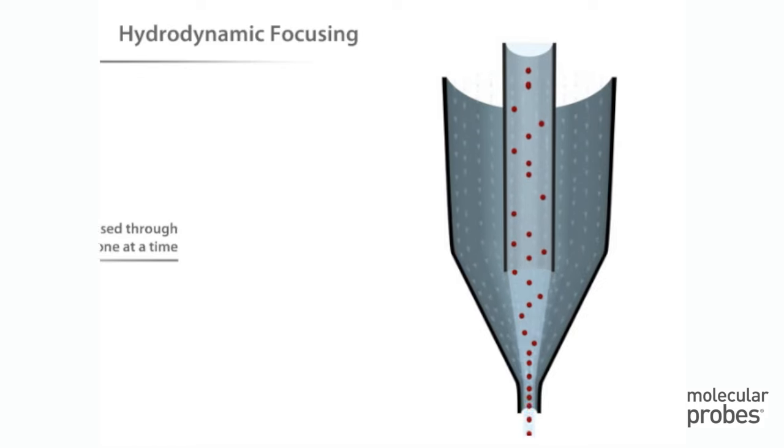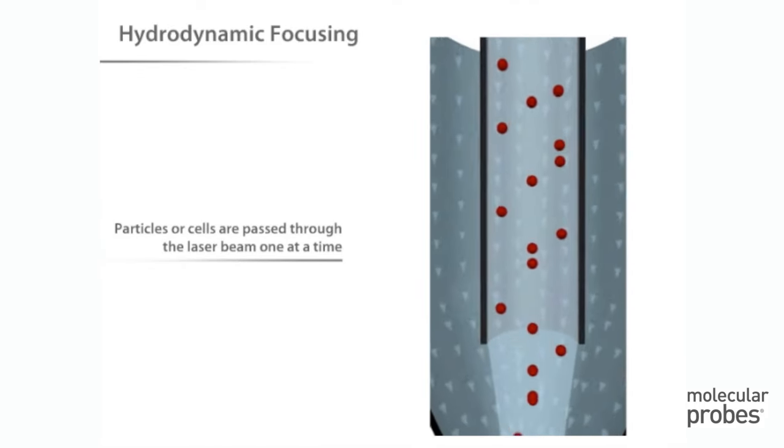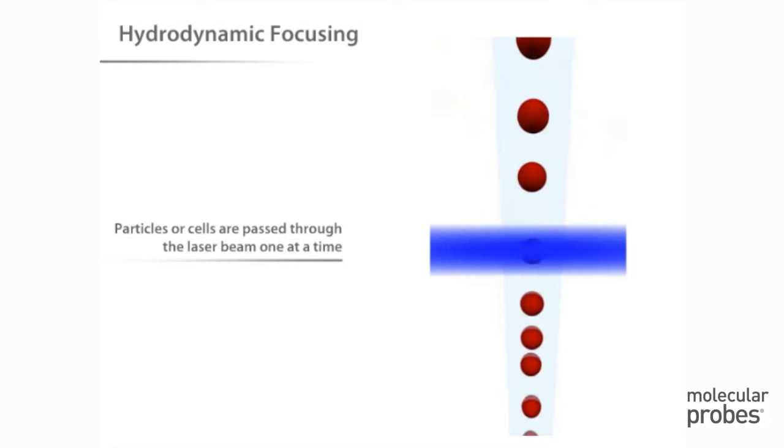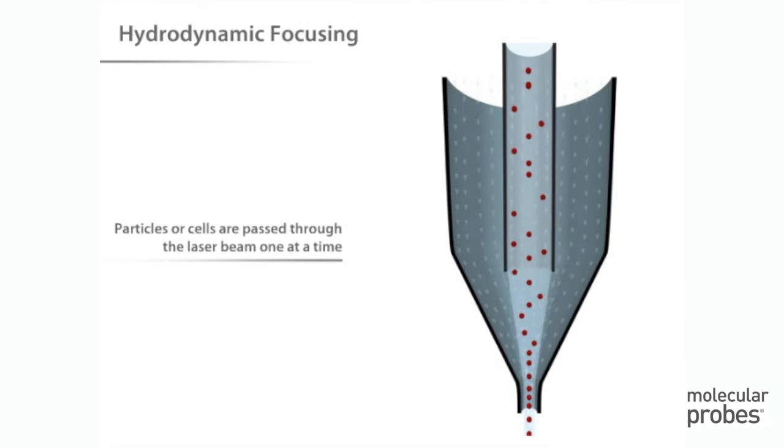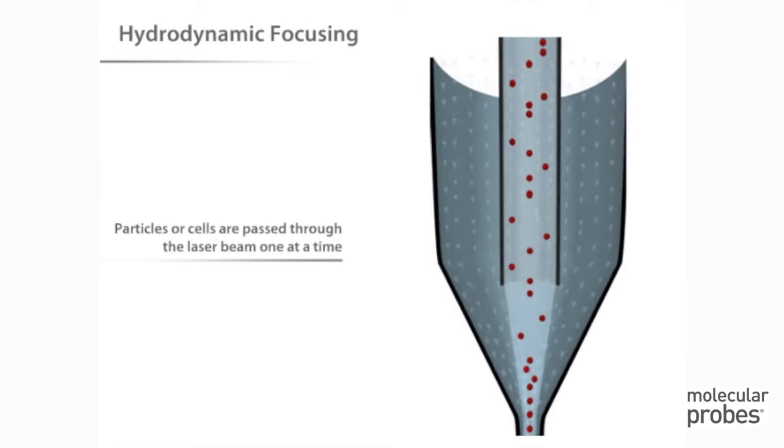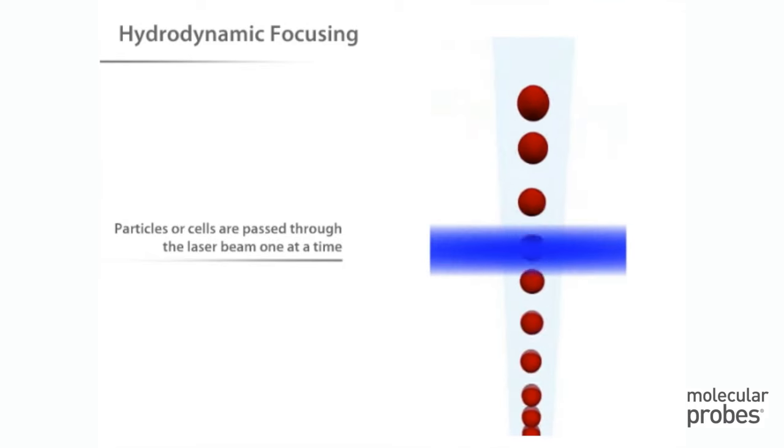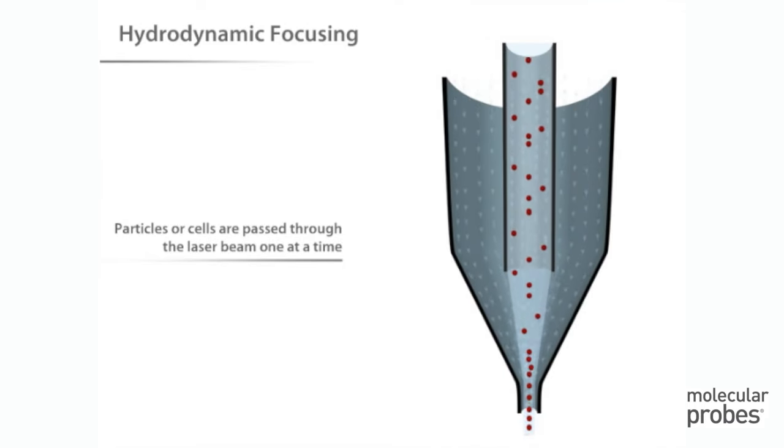For accurate data collection, it is important that particles or cells are passed through the laser beam one at a time. Most flow cytometers accomplish this by injecting the sample stream containing the cells into a flowing stream of sheath fluid or saline solution. As you can see, the sample stream becomes compressed to roughly one cell in diameter. This is called hydrodynamic focusing.